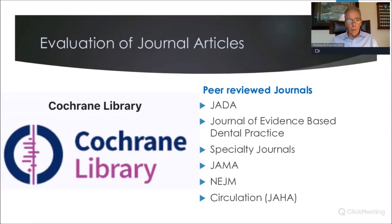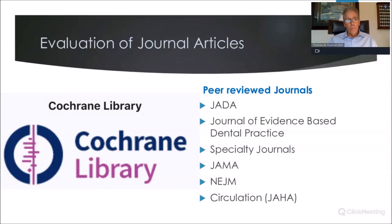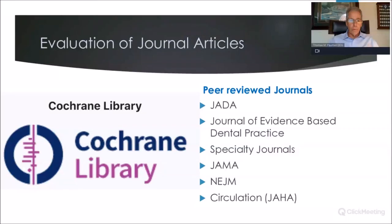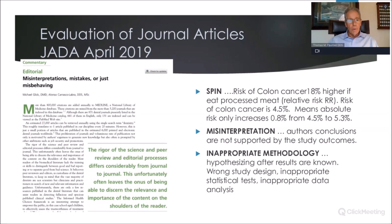Where should we look for journals? We want peer-reviewed journals such as JADA, the Journal of Evidence-Based Dental Practice, our specialty journals, the Journal of the American Medical Association, the New England Journal, and the Journal of the American Heart Association — Circulation. One of the best places is the Cochrane Library, where they look at all the literature on a certain topic and come to conclusions. The problem is it may be outdated — some reviews may be five or ten years old — but it's a great resource.